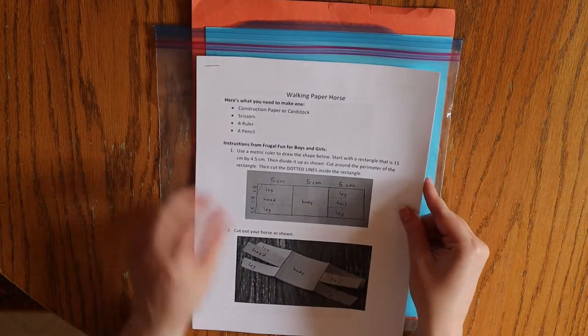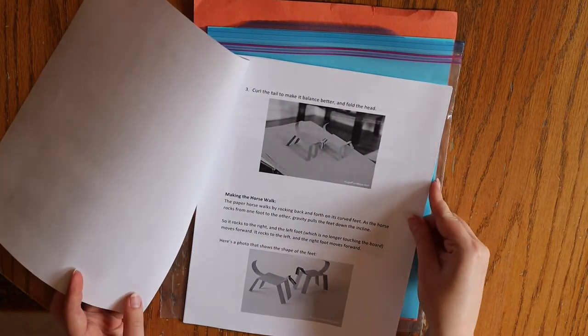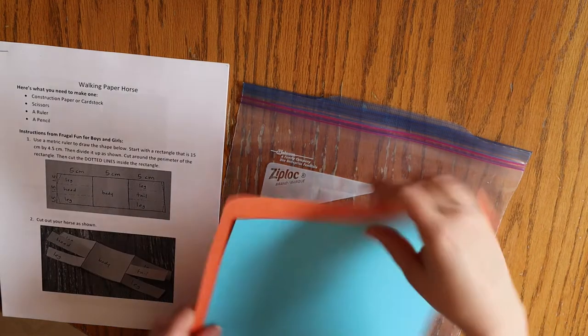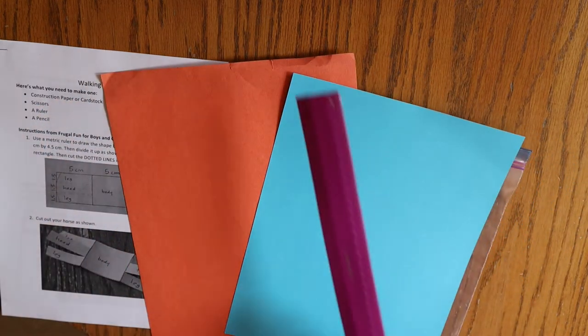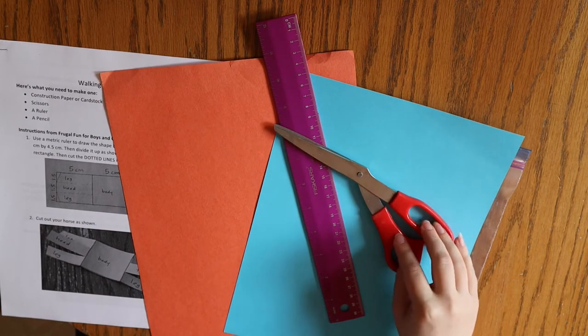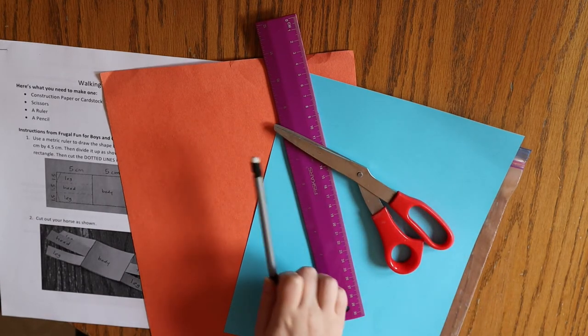In your kits, you'll find sheets with instructions and helpful tips to complete the project alongside two types of paper, cardstock and construction paper. You'll also need a ruler, a pair of scissors, and a writing utensil.